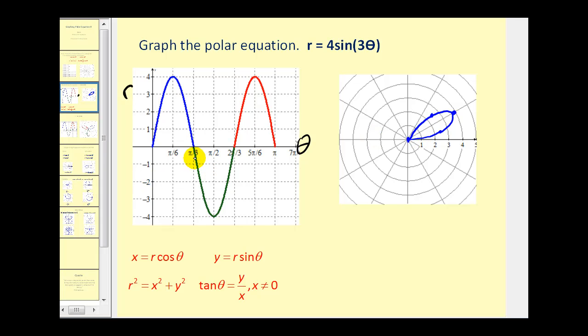Next from pi over three to two pi over three we might be thinking we should plot points in this region. However, we can see that the r value is going to be negative so we'd actually be plotting points in the opposite direction. So we'd be plotting points down in this region instead.